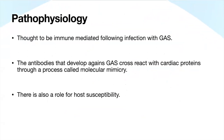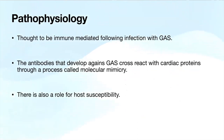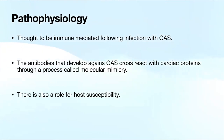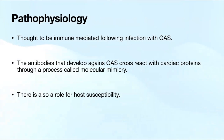The pathophysiology is thought to be immune-mediated following infection with group A streptococcus. The body naturally develops antibodies against this bacteria. These antibodies can cross-react with both cardiac proteins and other proteins in the body to cause the manifestations of rheumatic fever through a process called molecular mimicry—basically, the antibodies recognize these proteins as self-antigens and start attacking different parts of the body. There's also a role of host susceptibility, as not everyone who gets a strep infection will develop rheumatic heart disease.